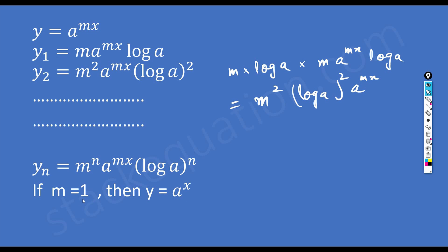There is a corollary here: if m equals 1, then 1 to the power n is 1, so putting m equal to 1 gives a to the power x into log a to the power n. We can generalize further for m equal to 1: the nth derivative of a to the power x is a to the power x into log a to the power n.